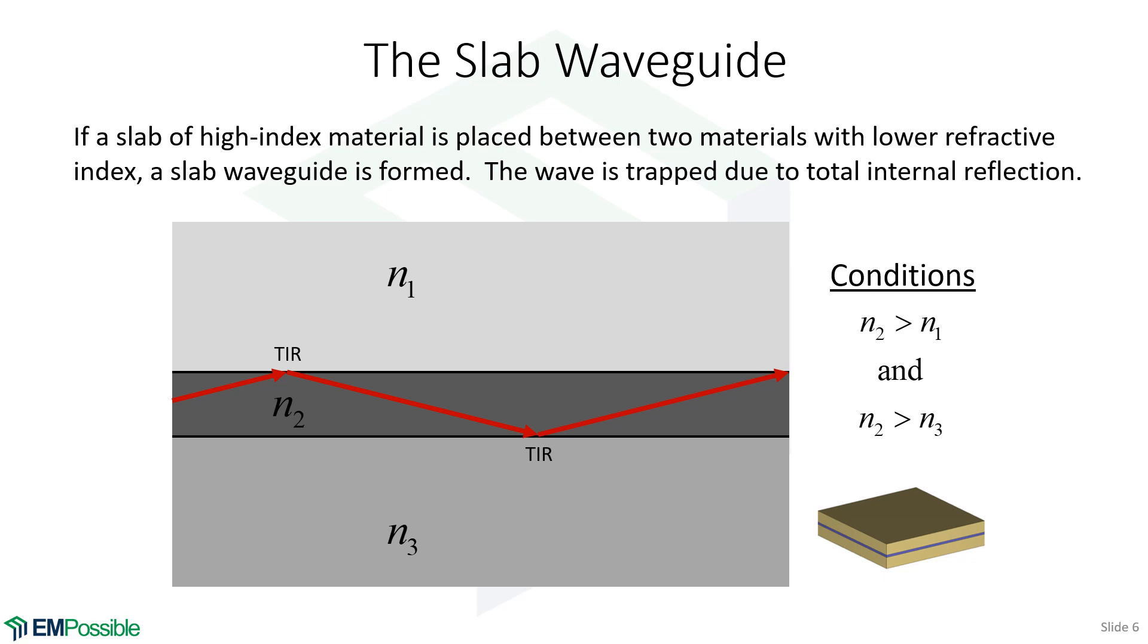Now let's say we have a slab of material with refractive index n2, sandwiched between two different slabs that have a different refractive index. If n1 and n3 are both lower than n2, then there will be an angle where we get total internal reflection, and waves can stay trapped inside this region n2. This is waveguiding—it happens in dielectric structures due to total internal reflection.